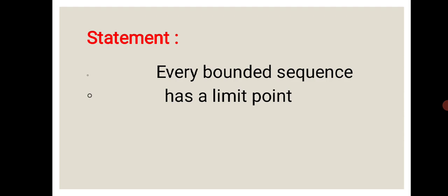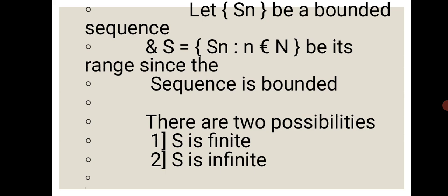Let's see our proof. We have to take a sequence Sn which is bounded. We know the definition of bounded sequence from the basic concepts above. And let S = {Sn : n ∈ ℕ} be its range. Since the sequence is bounded, to prove this theorem we have to take two possibilities: first, S is finite, meaning the sequence contains limited members; and second, S is infinite, meaning the sequence contains unlimited members.